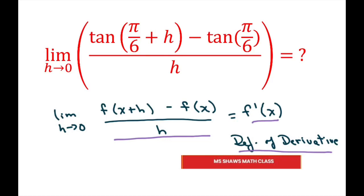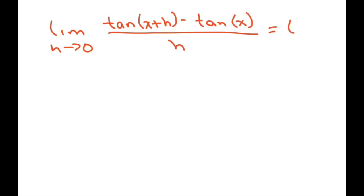So basically what we're going to do is if we replace f of x with tan of x, we're going to get the limit as h goes to 0: tan of x plus h minus tan of x divided by h, which we know that's just the derivative of tan.